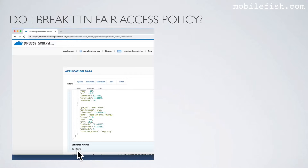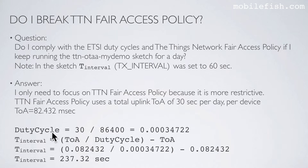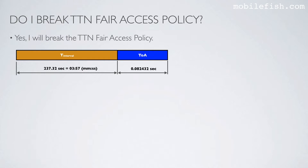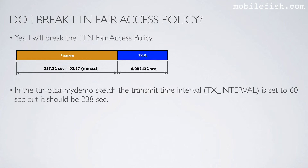As you can see here, first we calculate the duty cycle, and then we can calculate the transmit time interval, which is 237.32 seconds. So yes, I will break the Things Network Fair Access Policy. In the TTN OTA My Demo sketch the transmit time interval is set to 60 seconds, but it should be 238 seconds.